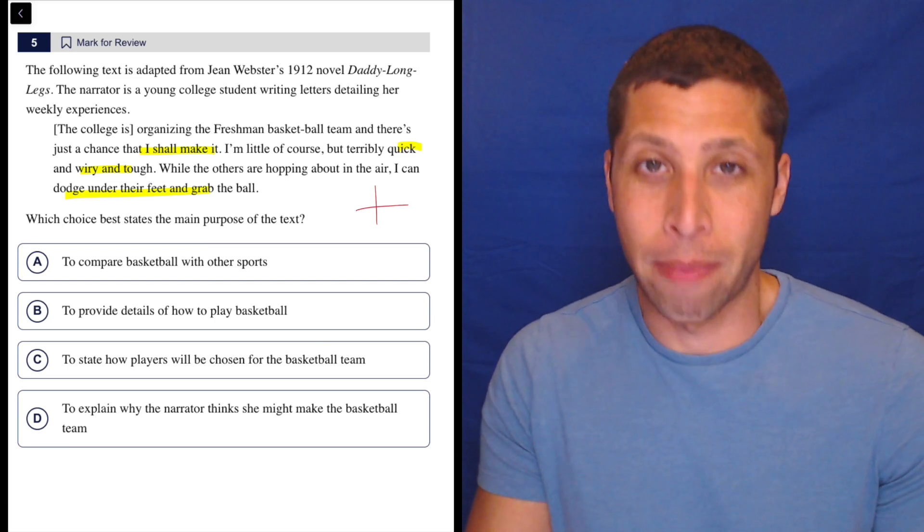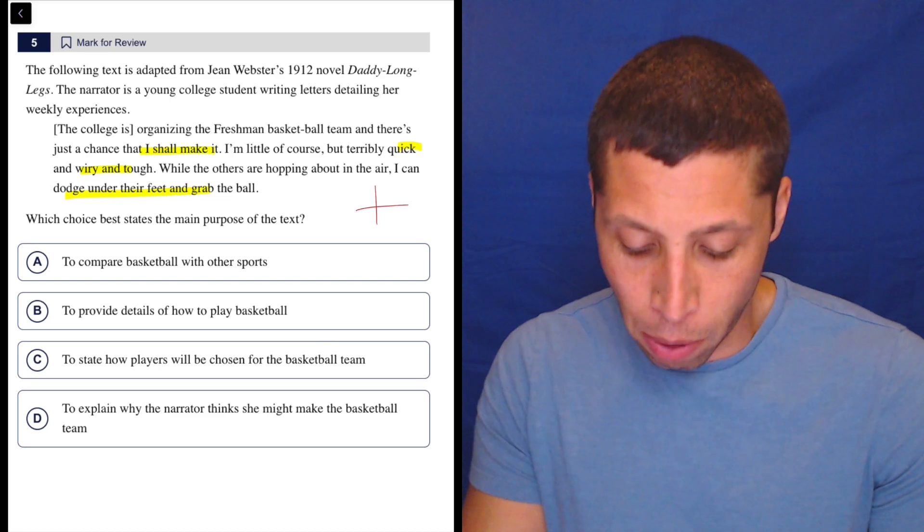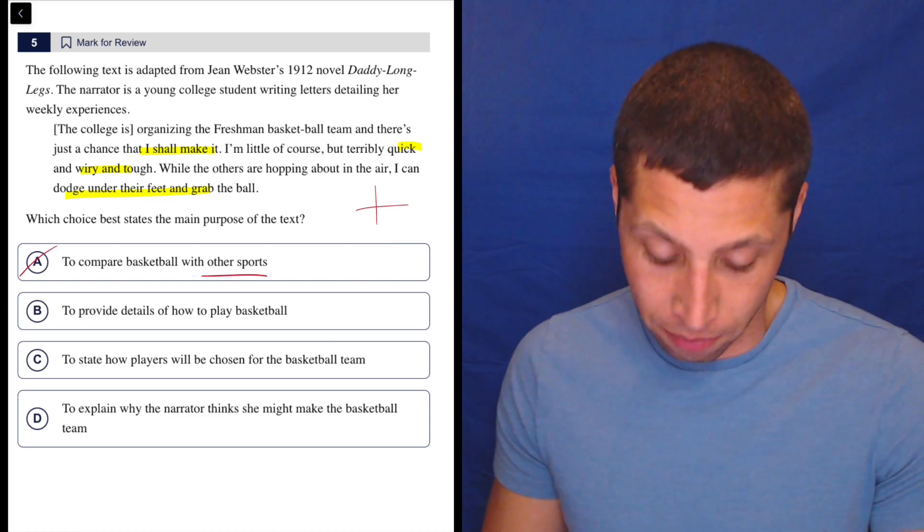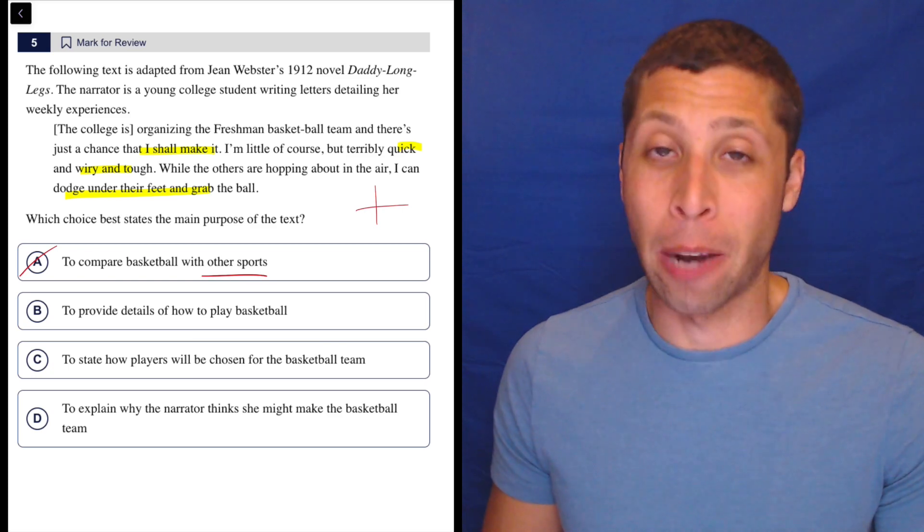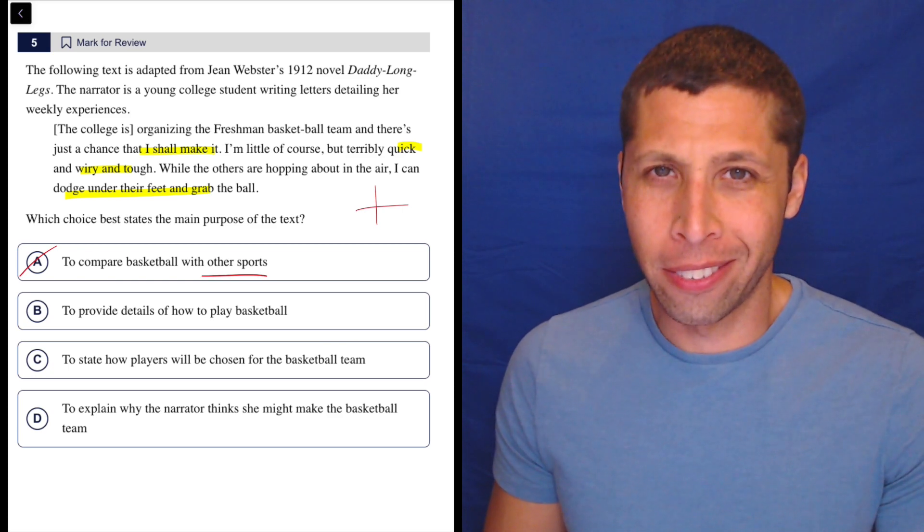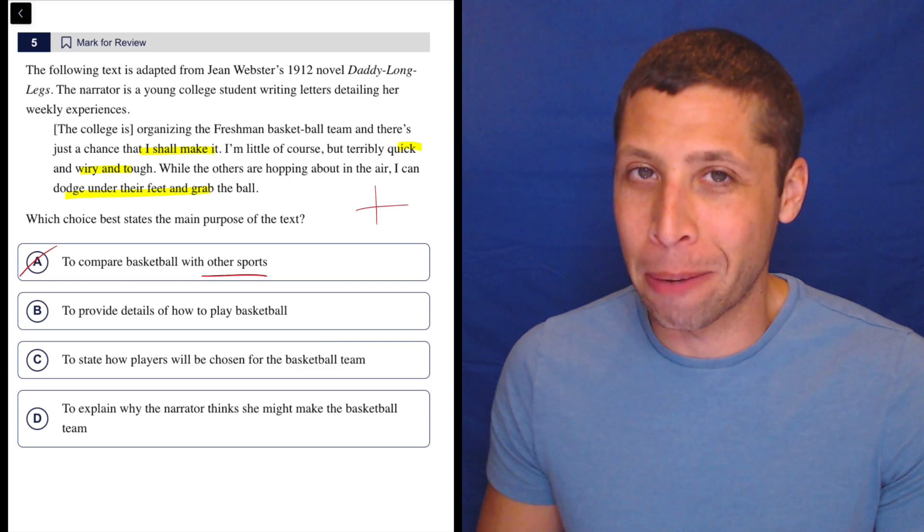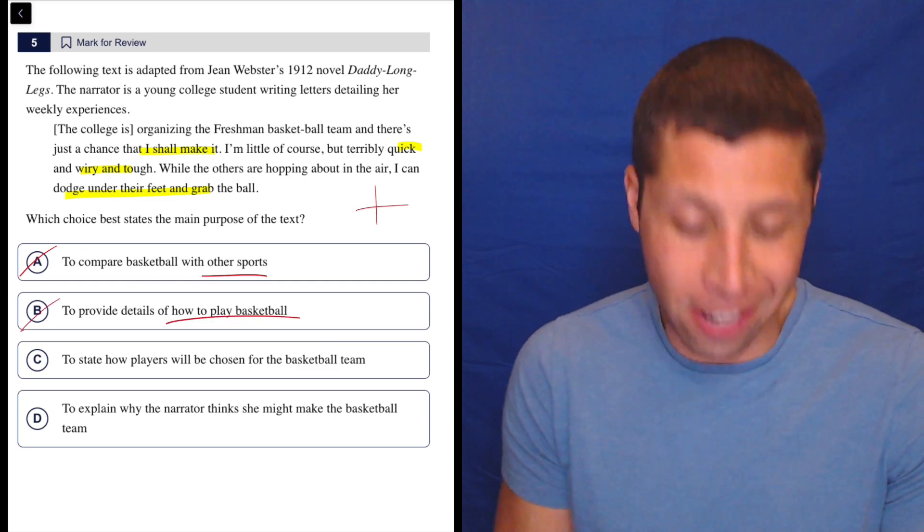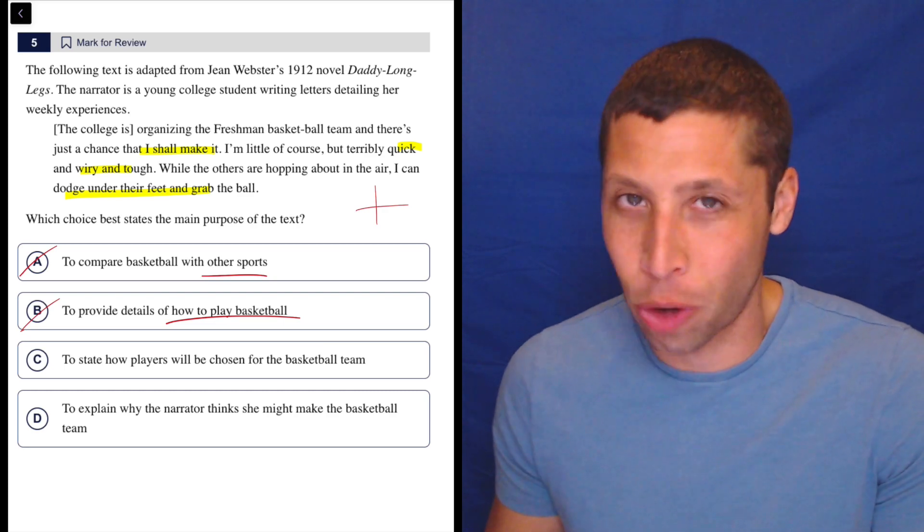I don't know, to compare basketball with other sports? Well of course, they don't talk about other sports so we can get rid of that choice pretty confidently. B, to provide details of how to play basketball? Well no, I mean I guess she does talk about dodging and hopping but that's not like the rules of basketball. So no, did they say how to play here? Is this an instruction manual? Absolutely not.